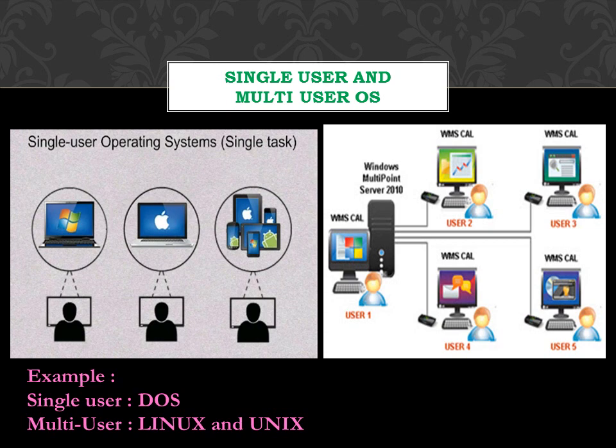A single user operating system works on more than one task and processes them concurrently at a time. On the other hand, a multi-user operating system enables multiple users to use the resources of computer systems simultaneously and at different times. An example of a single user system is DOS, which means disk operating system, while Unix and Linux are multi-user operating systems.